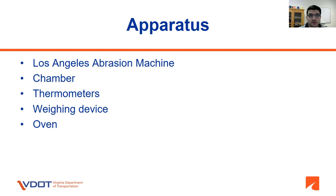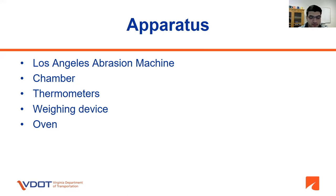The apparatus needed to perform the Cantabro mass loss test includes: a Los Angeles abrasion machine as specified in AASHTO T96; a chamber large enough to hold the Los Angeles machine with ambient temperature controllable to a maximum margin of error of plus or minus one Celsius degree from the specified test temperature; thermometers measuring ambient temperature placed in the proximity of the machine; a weighing device readable to 0.1% of the sample mass or better conforming to AASHTO M231; and an oven capable of maintaining the appropriate temperature for drying specimens to a constant mass.